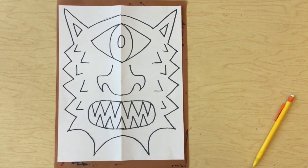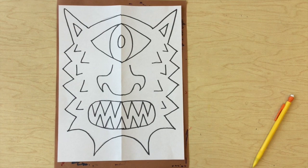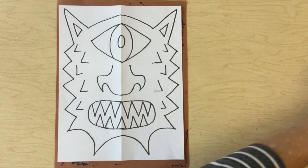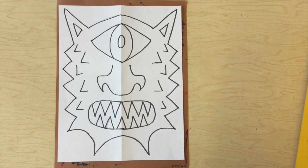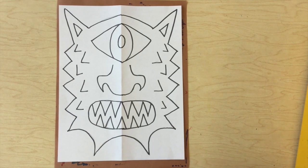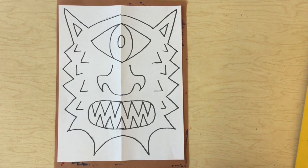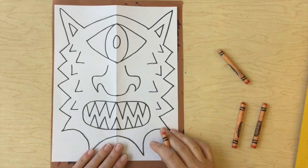I like to layer the crayon colors. I think it helps to color a little faster too. I'm going to choose a couple different colors of orange for my monster's face.